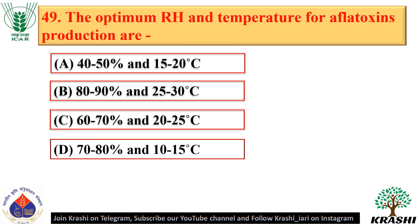Question number 49. The optimum relative humidity and temperature for aflatoxin production are 60 to 70% RH and 20 to 25 degrees Celsius — option C.